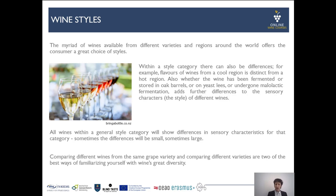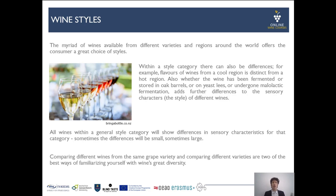Within a style category there can also be certain differences. For example, flavors of wines from cool regions are distinct from hot region wines. Also, whether the wine has been fermented or stored in oak barrels, or aged on lees, or whether it underwent malolactic fermentation — all of that adds further differences to the sensory characteristics and style. You will find many examples of this within the videos of this project.